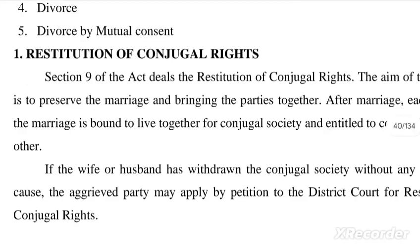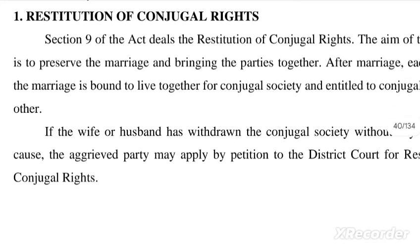The first remedy is restitution of conjugal rights. Section 9 of the Act deals with restitution of conjugal rights. The aim of this section is to preserve the marriage and bring the parties together. After marriage, each party is bound to live together for conjugal society. If the wife or husband has withdrawn from conjugal society without any reasonable cause, the aggrieved party may apply by petition to the district court for restitution of conjugal rights.